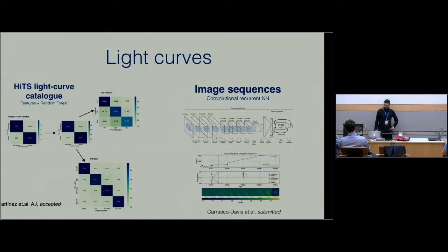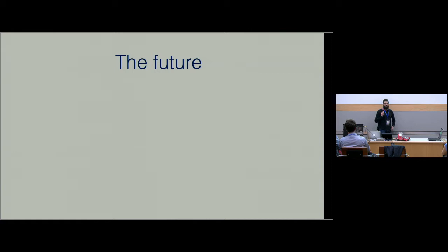This is what we're currently doing - image sequence classification using convolutional recurrent neural networks. The idea is we have a convolutional neural network connected to a recurrent neural network, an LSTM. We have sequences of images and then we classify them into different variable sources. This paper has been submitted. It's from one of our students. We're a big group.